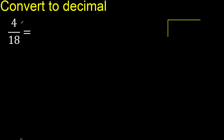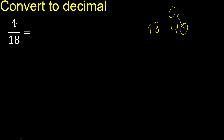4 divided by 18. 4 is less, therefore complete — always complete with 0 here: 0 point. So we write 0 point 40.